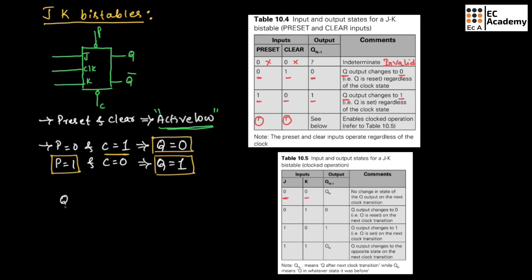Here Qn plus 1 represents next state and Qn represents the present state. If we say next state, which means whatever output we get if we apply clock signal. If we say present state, the present output of the bistable. When J is 0, K is 0, output will be present state. Output will not change. Whatever output we have got for the previous state, the same output will obtain.